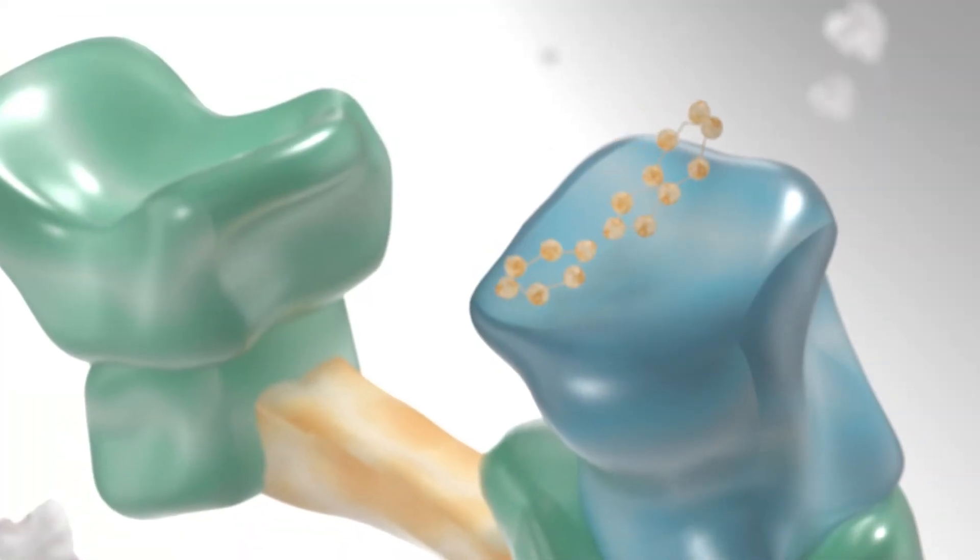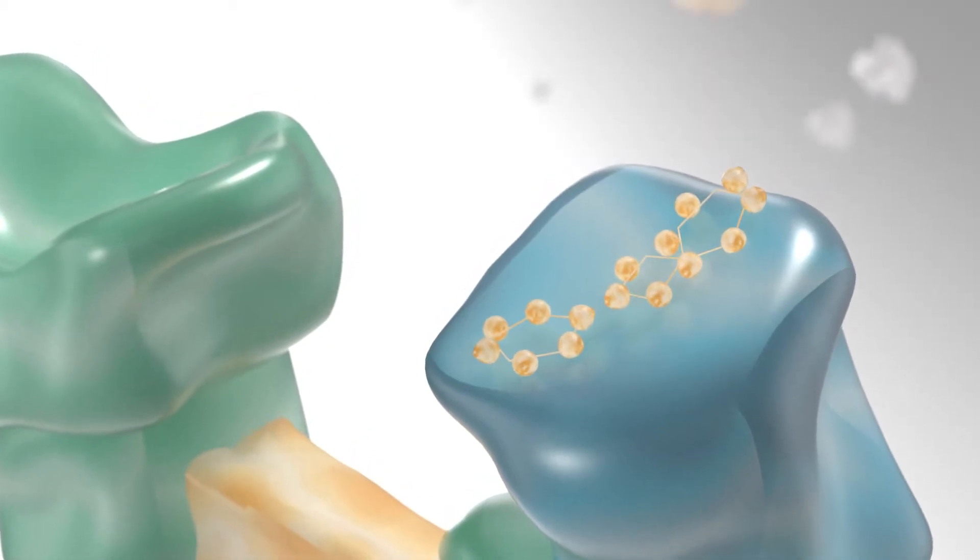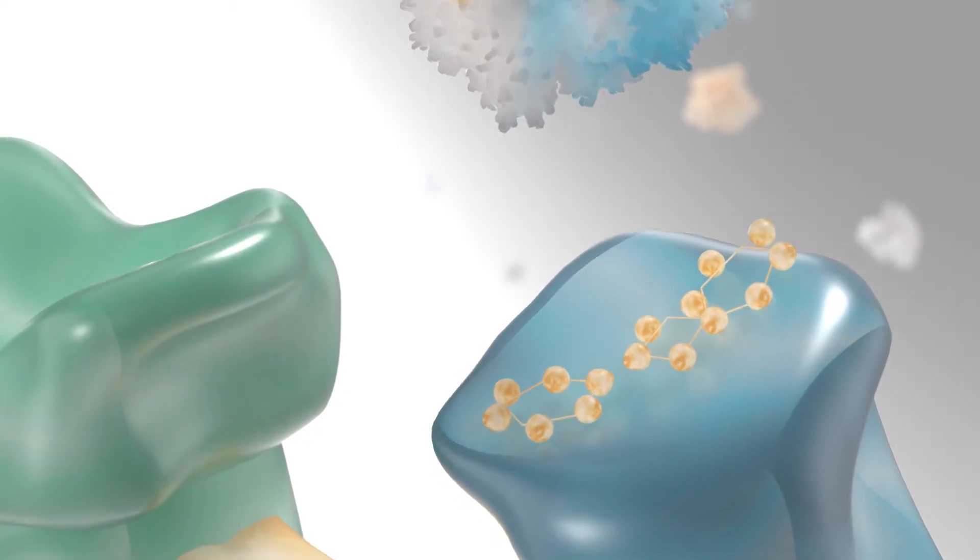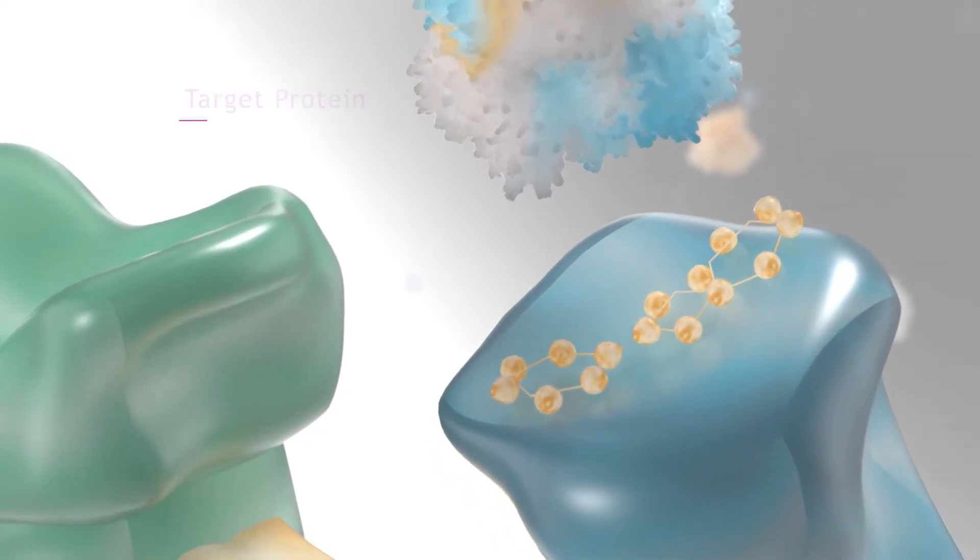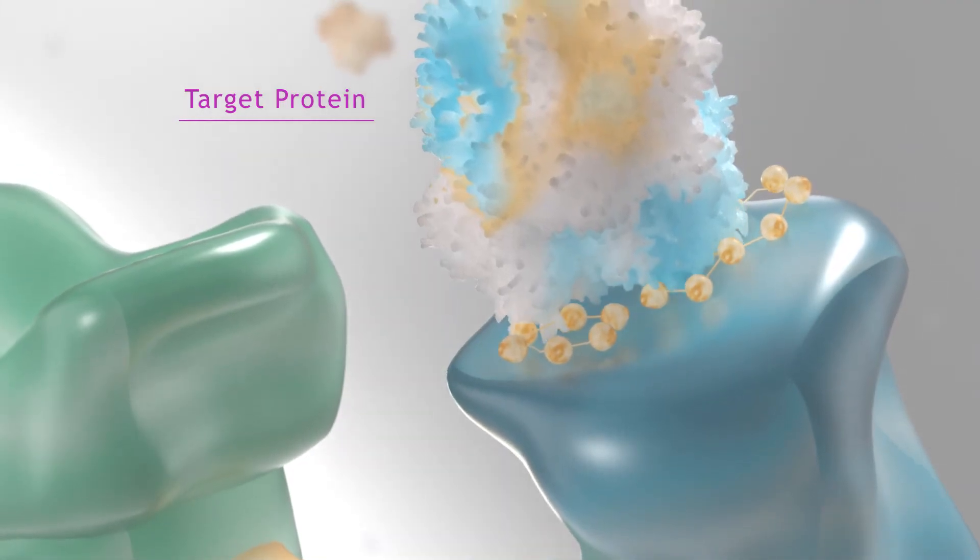Once the molecular glue is bound onto the protein complex surface, it fundamentally changes what that protein complex can stick to. In some cases, allowing it to glue to a new harmful target protein that otherwise would have no interaction with it.